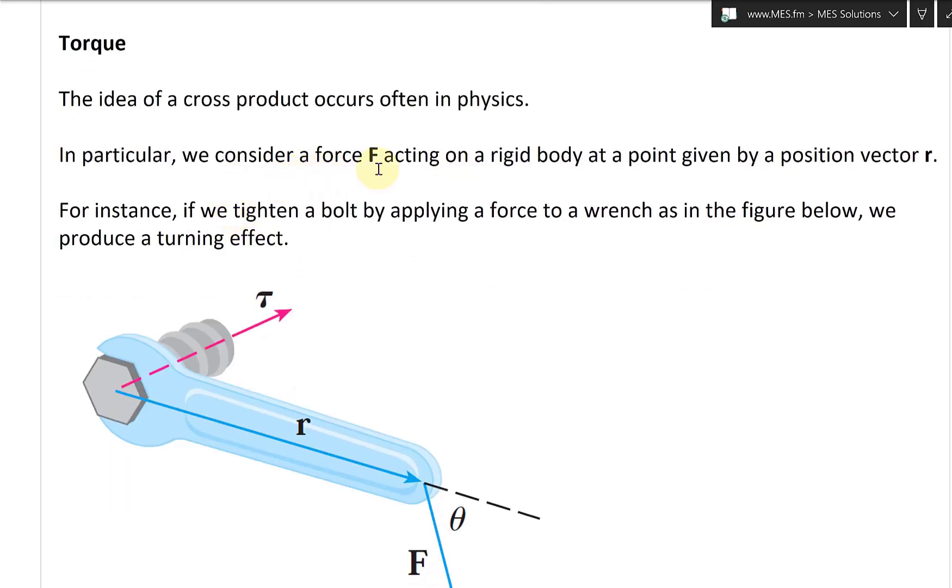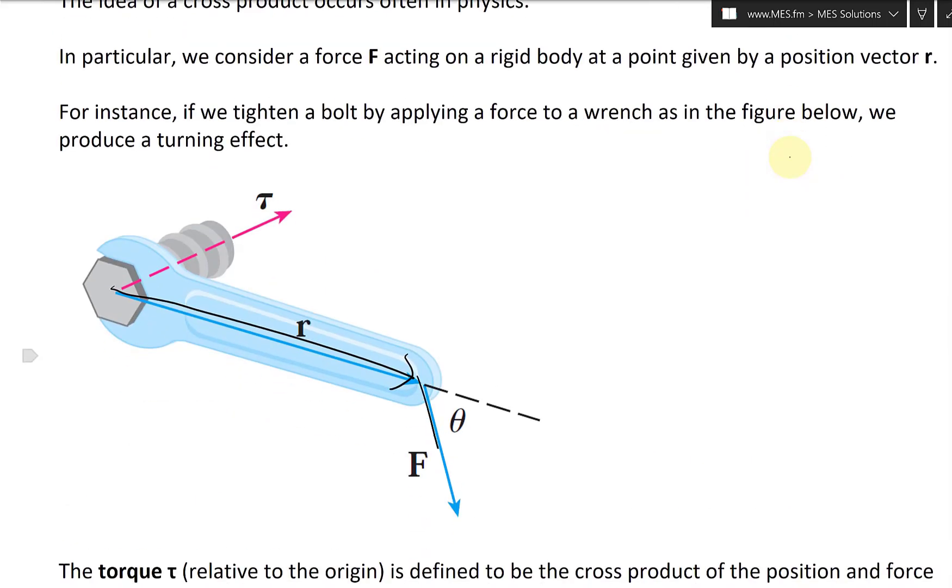So the idea of a cross product occurs often in physics. In particular, we consider a force F acting on a rigid body at a point given by a position vector r. So let's say you have a distance here as the r, then you have a force here.